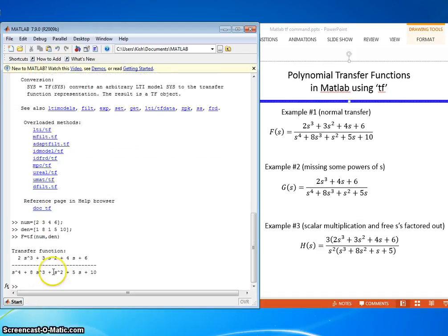And there it is. As it should exactly match what the function is over here, it's a good way to check it. 2s cubed plus 3s squared plus 4s plus 6, that checks. s to the fourth plus 8s cubed plus s squared plus 5s plus 10, and that checks.